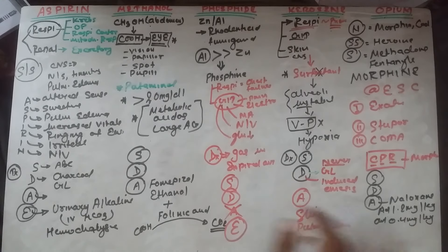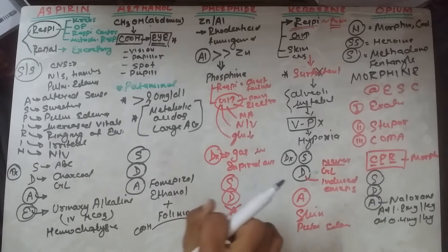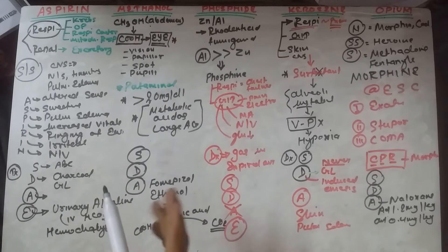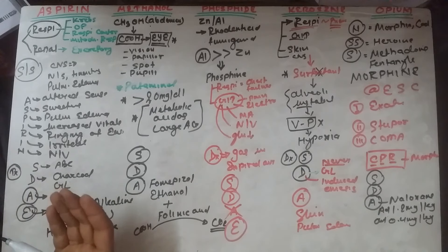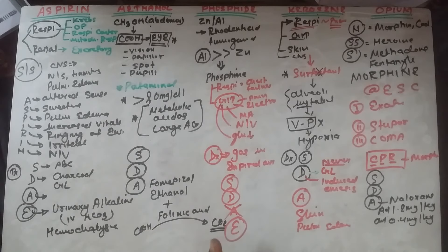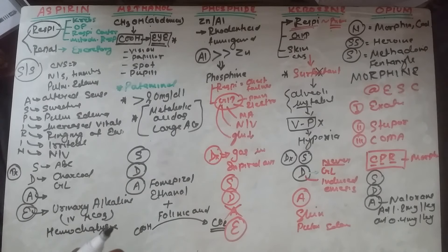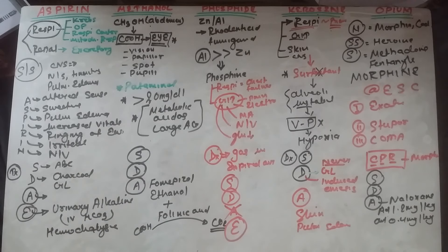In chronic opium poisoning, do not give naloxone. Instead, give methadone as a substitute — it is a synthetic opioid. Sudden withdrawal should never be done; taper the dose gradually. Along with methadone, give propranolol and a tranquilizer/sedative at bedtime.